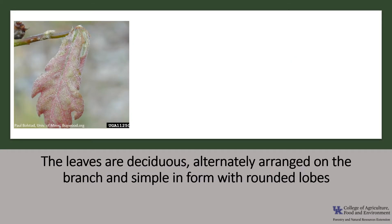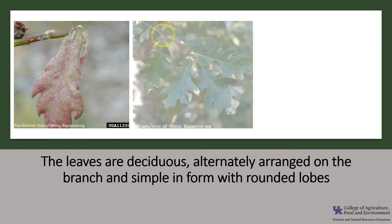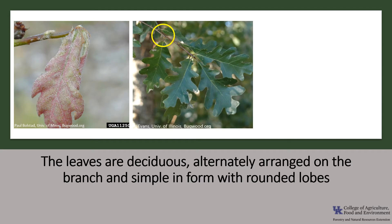The leaves of the white oak are deciduous and are rose-colored when they unfurl in the early spring, maturing into a darker green. They are alternately arranged on the twig, as you can see in the photo here, and simple — made up of only one blade. They are typically four to seven inches long with seven to ten rounded lobes.